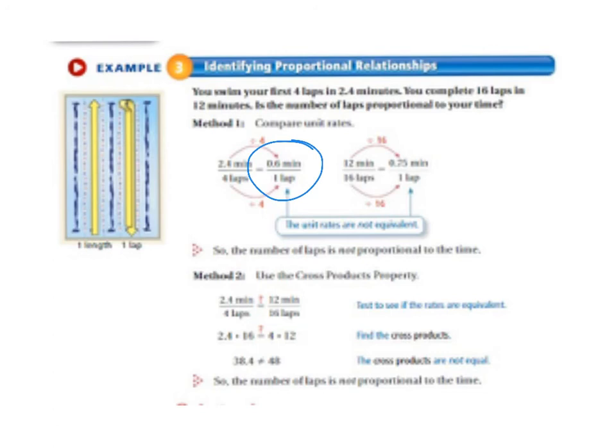And if you swim 16 laps in 12 minutes then you're going to divide the bottom by 16 and the top by 16 and that's 0.75 minutes per lap. So those two unit rates are not equivalent. So the number of laps is not proportional to the time.